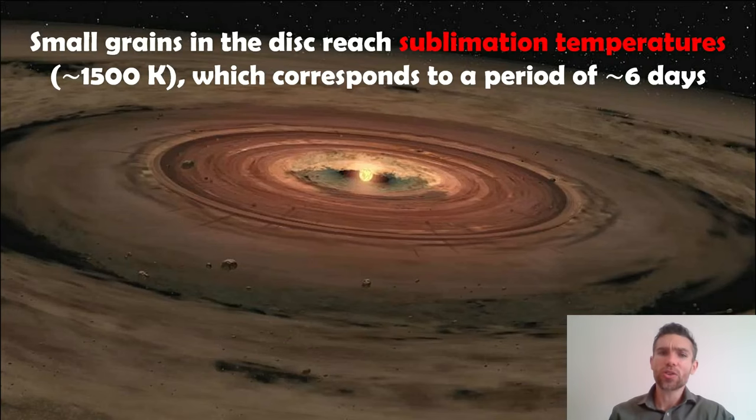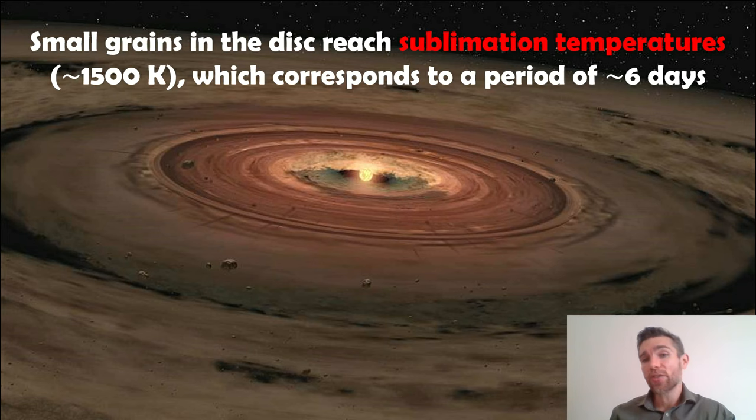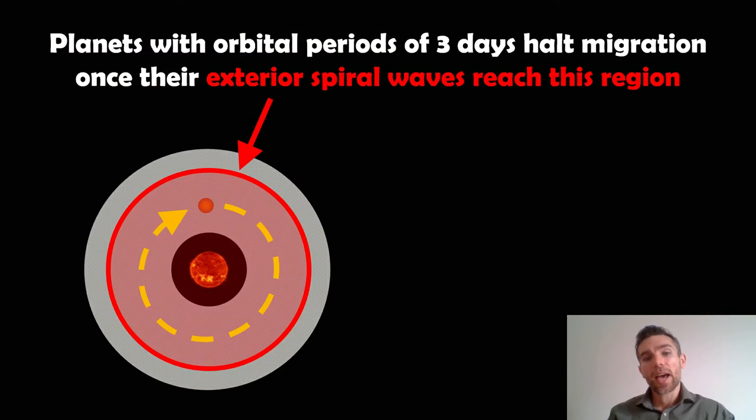This happens around about 1500 Kelvin, and that is around about an orbital period of six days, which is quite close to the star. That is where it actually occurs and then you get this kind of clearing of the solid dust material at that point. Planets with orbital periods of about three days will halt migration once their exterior spiral wave reaches this region on the outer part. They go inwards and then when the outer part reaches that, they can no longer interact with the solid material in the disk and it then halts the migration.